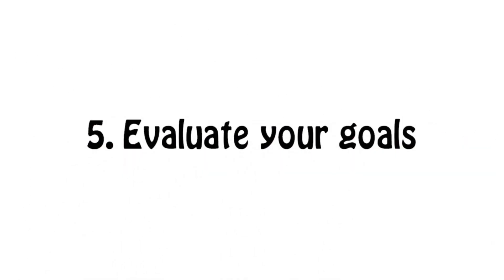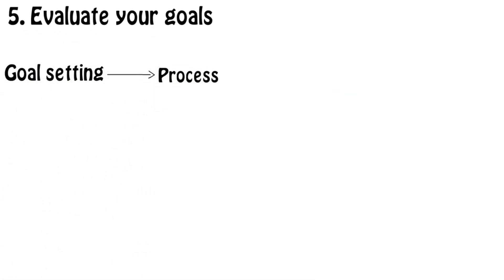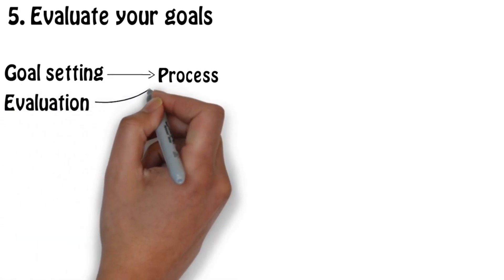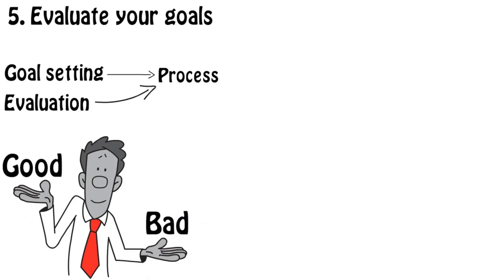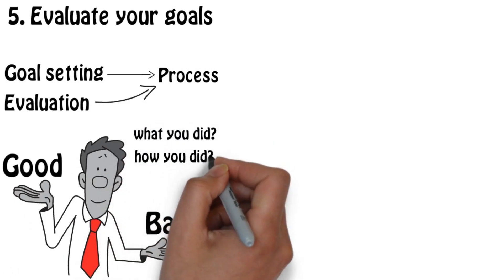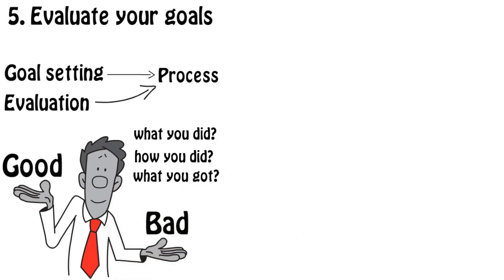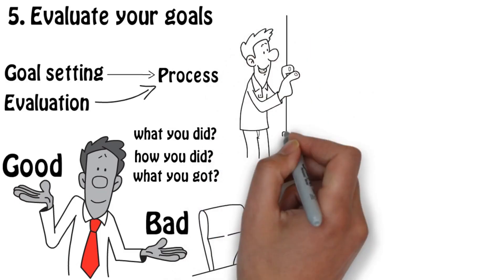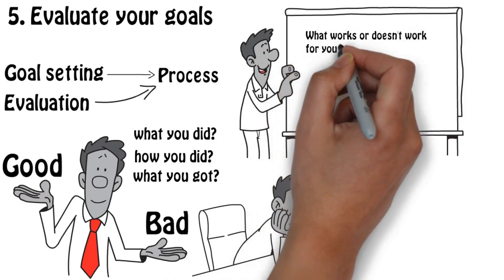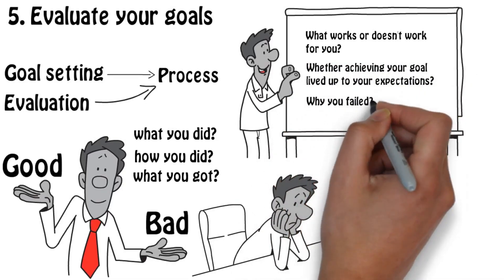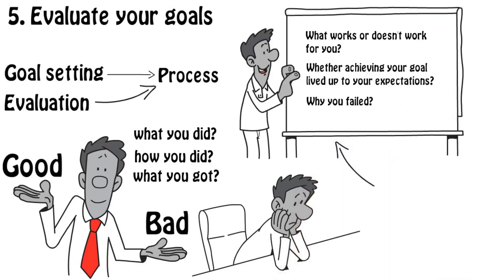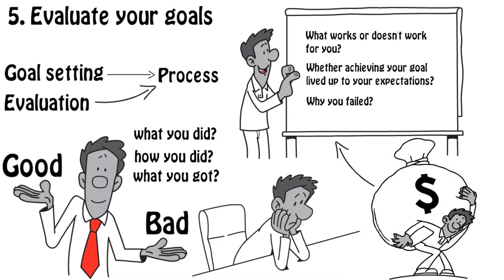Number 5: Evaluate your goals. Remember that goal setting is a process and evaluation is an important part of that process. Don't just settle for a good or bad assessment. Think about what you did, how you did it, and what you got out of it. Whether you successfully accomplished your goal or not, there's always something to be learned. What works or doesn't work for you, whether achieving your goal lived up to your expectations or maybe even why you failed. Extracting these lessons will increase your accomplishments even more as you apply them to your future goal setting experience.